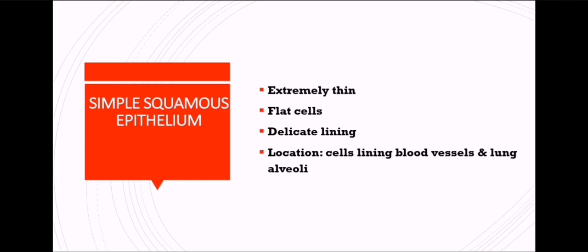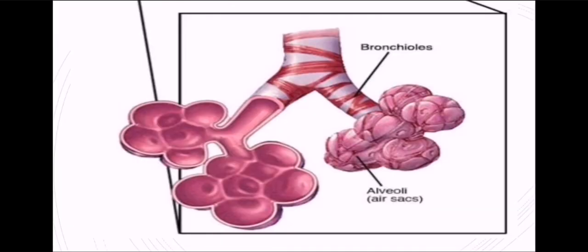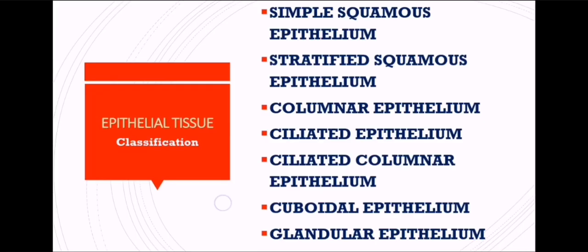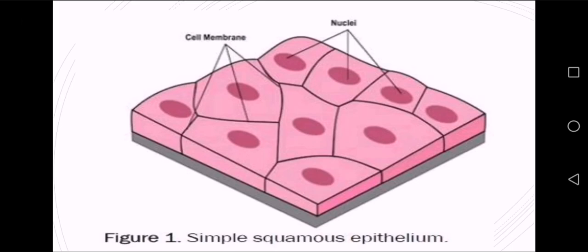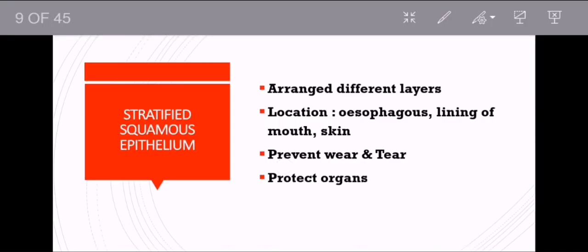Simple squamous epithelium means only one single thin layer of epithelium. The cells are extremely thin and flat — very thin and flat cells with a delicate lining. This type is present in the lining of blood vessels — arteries and veins — and in lung alveoli, where diffusion of blood and gases also takes place. In the diagram you can see flat cells with no intercellular spaces; these cells have nuclei and a cell membrane, and they are present in alveoli and blood vessels.